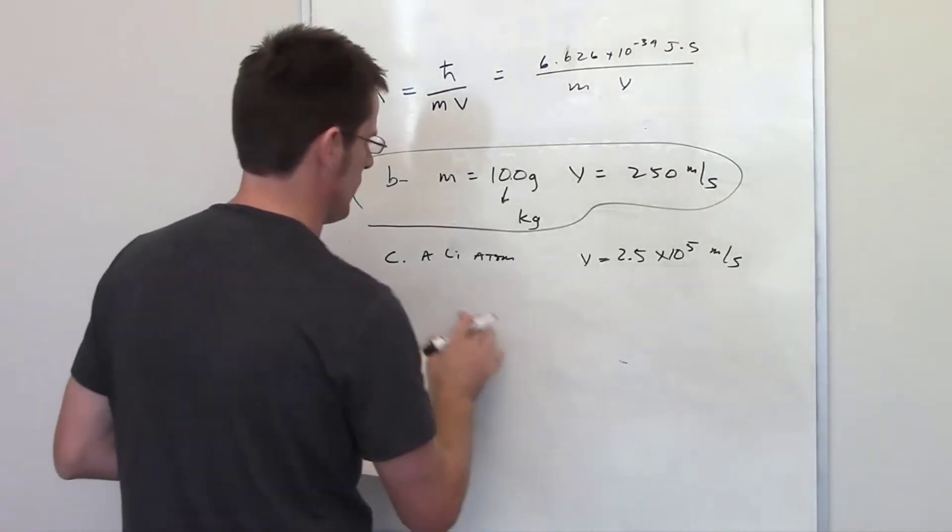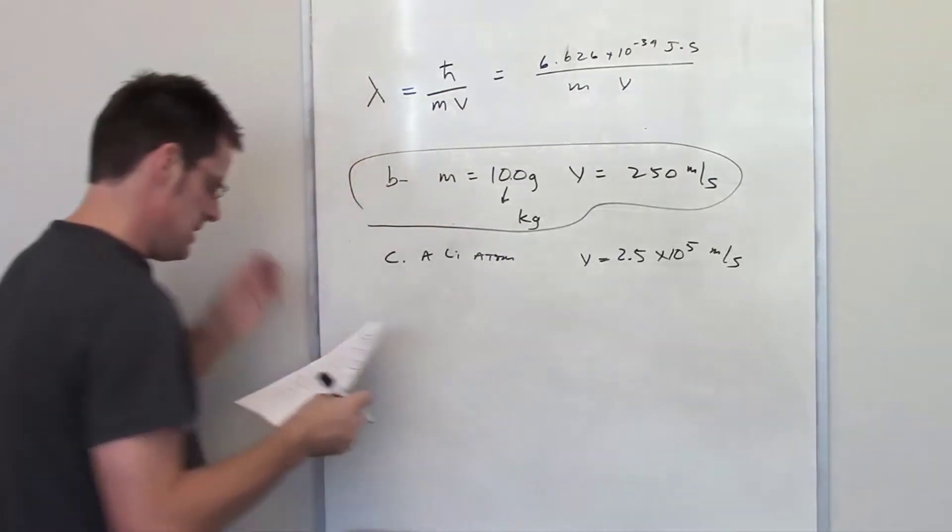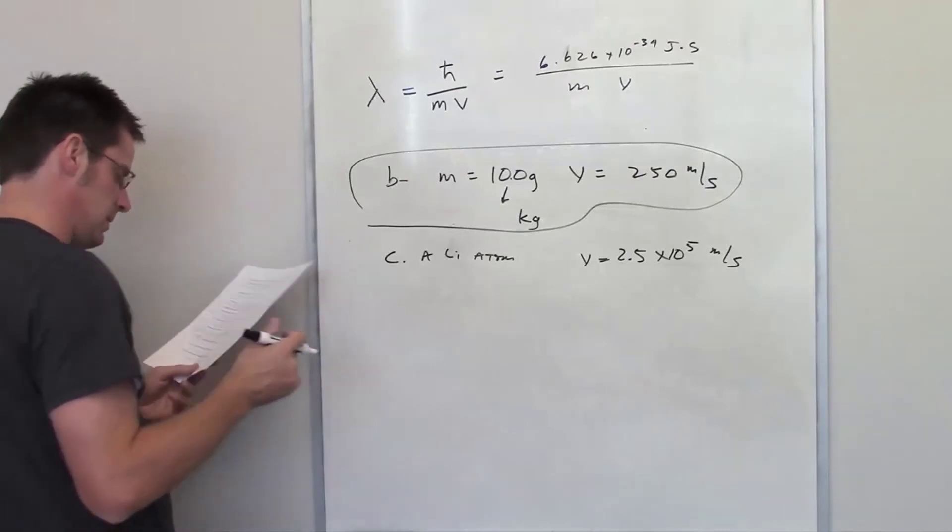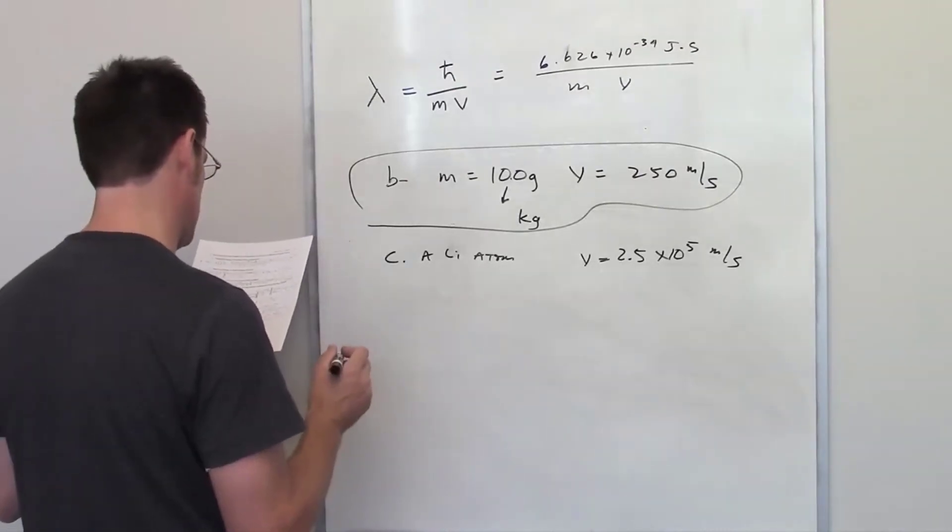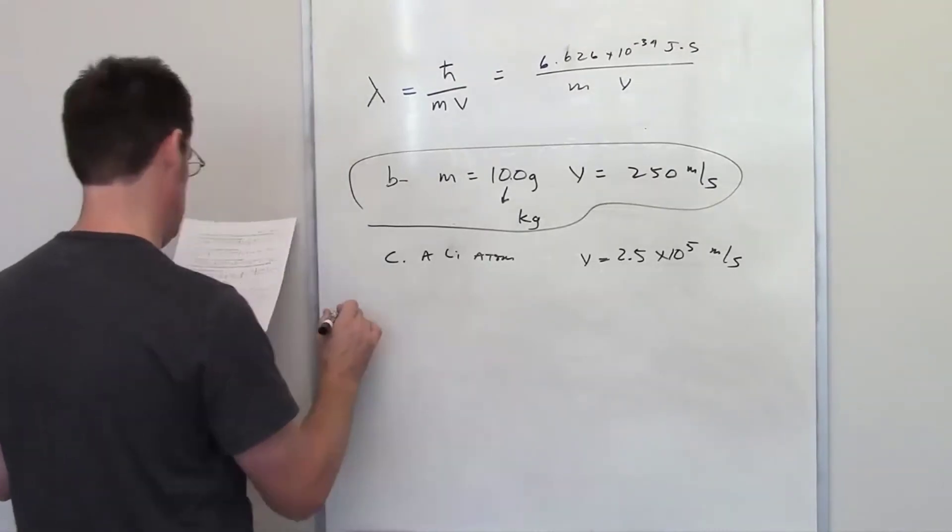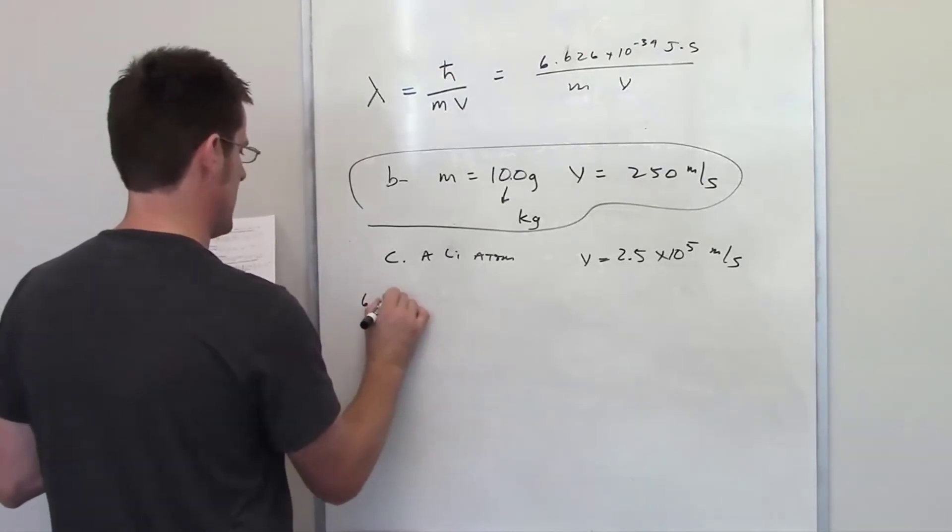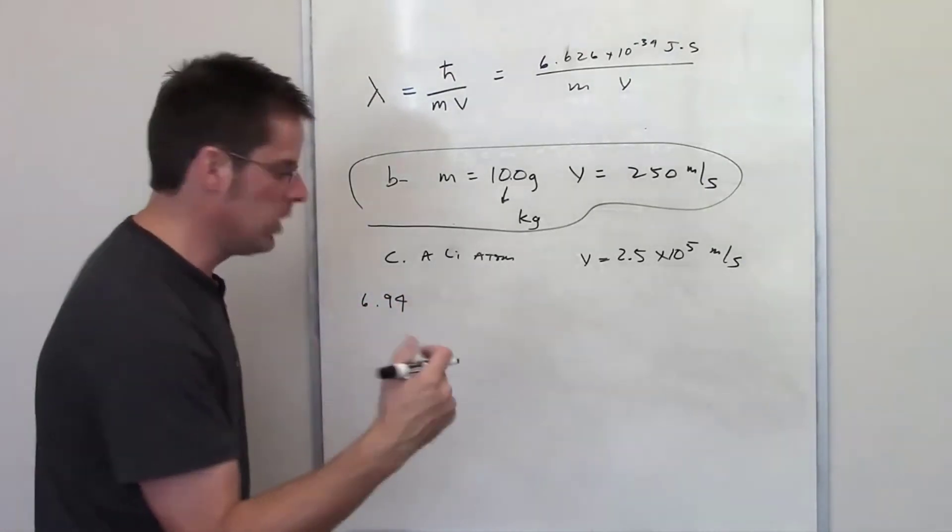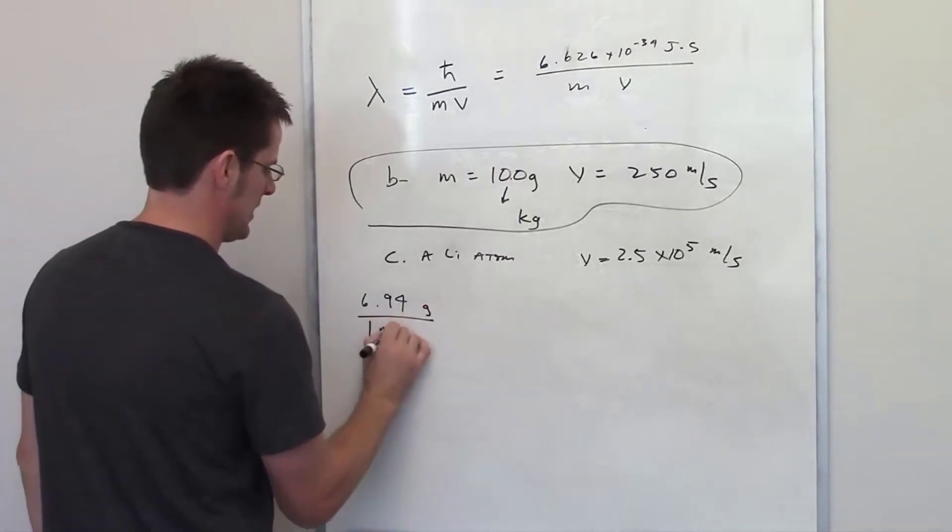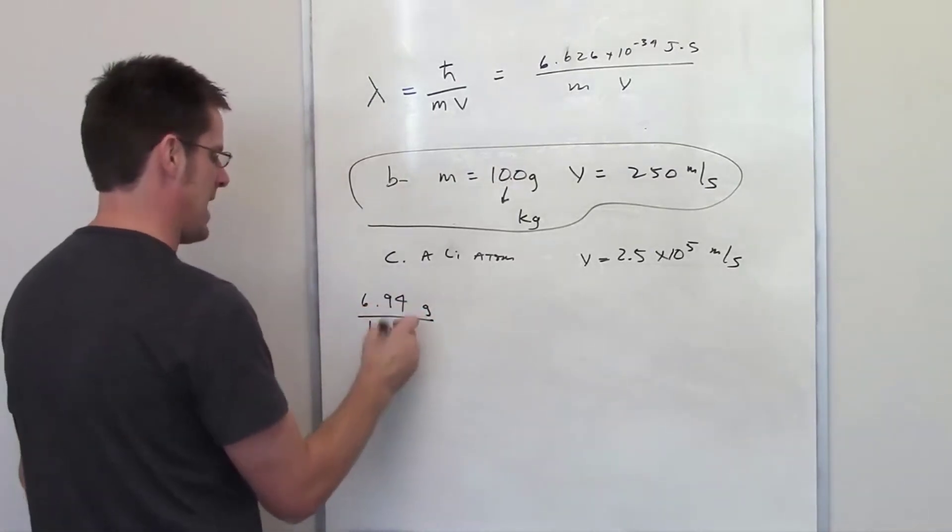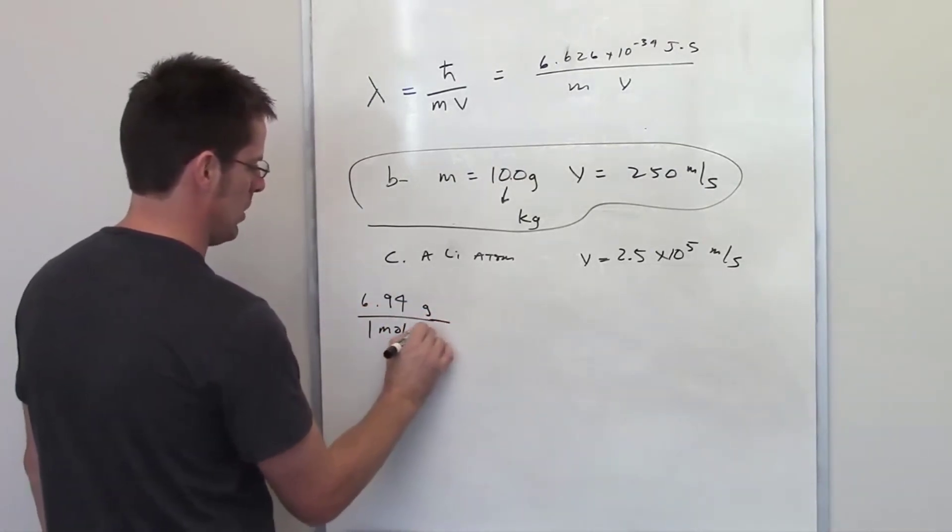The trick with the lithium atom is to figure out its mass because it's not given to you. A lithium atom, if you look at the periodic table, has an atomic mass of 6.94. What that means is that if you had a mole of lithium atoms, you'd have 6.94 grams.